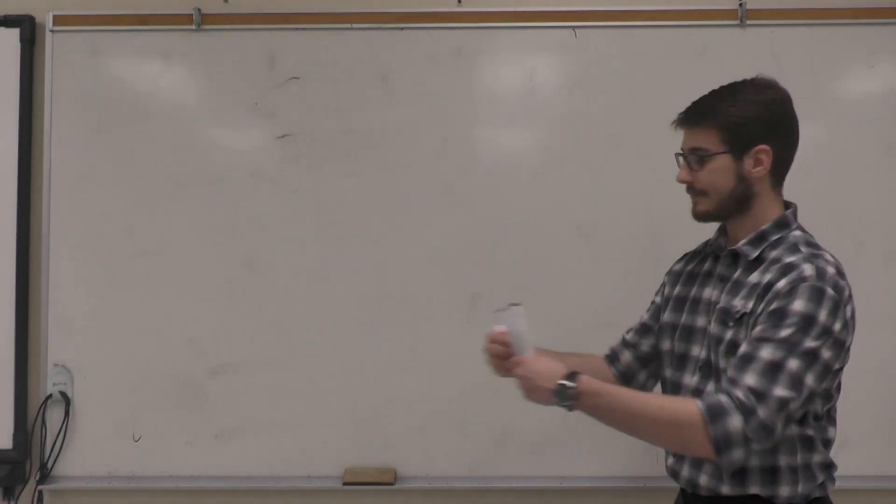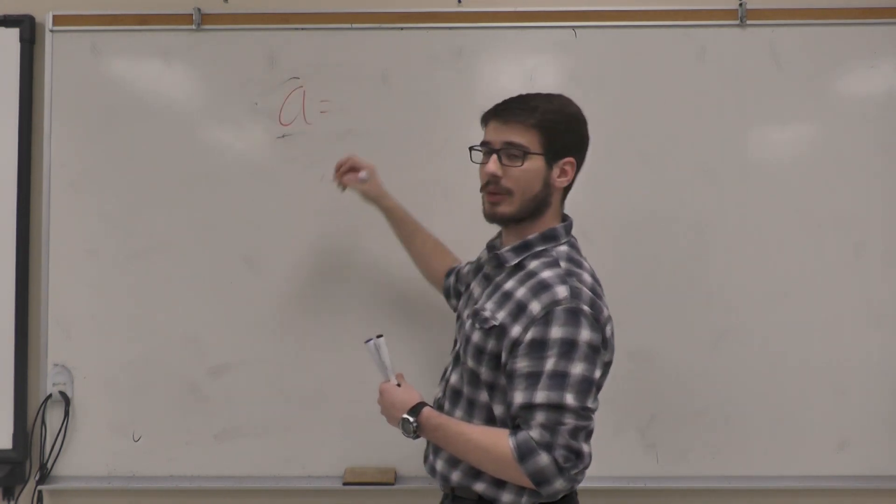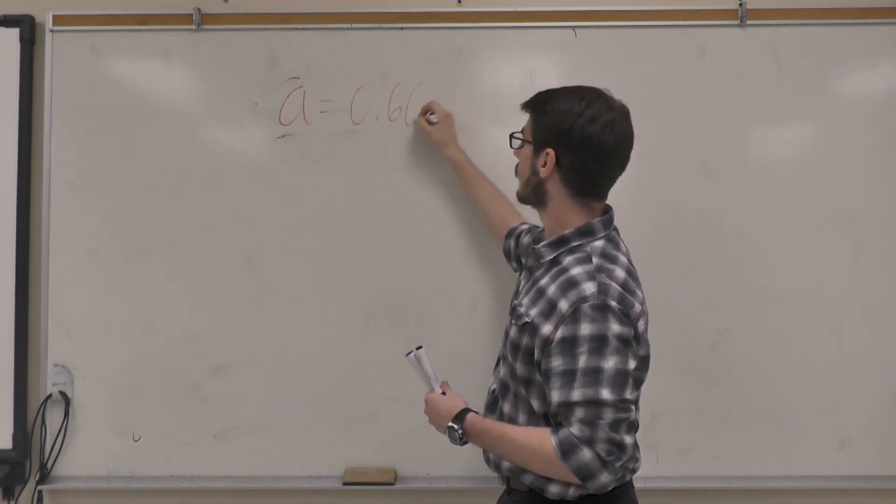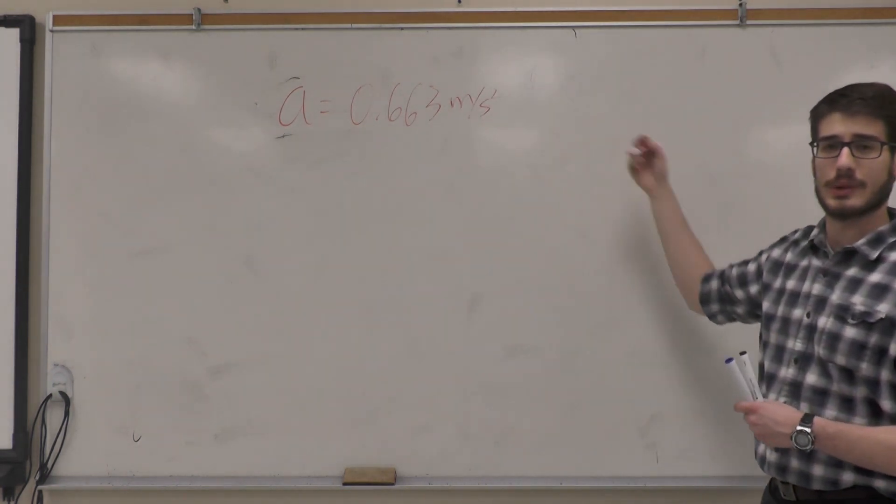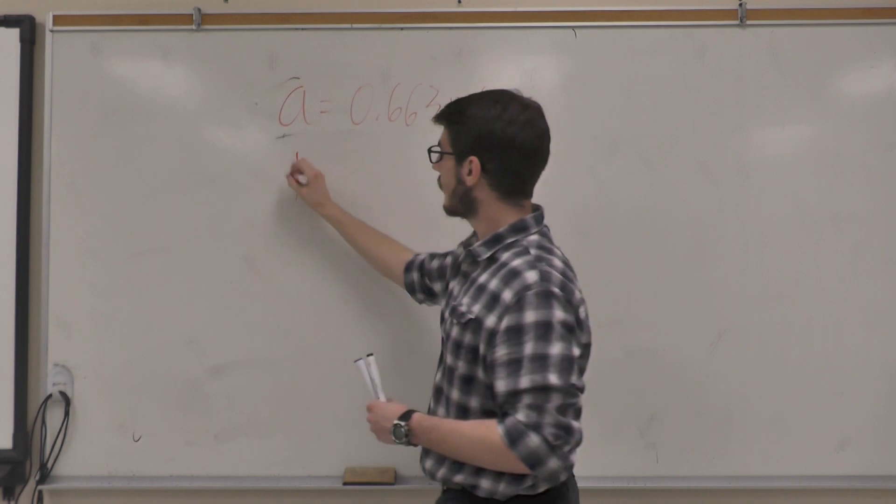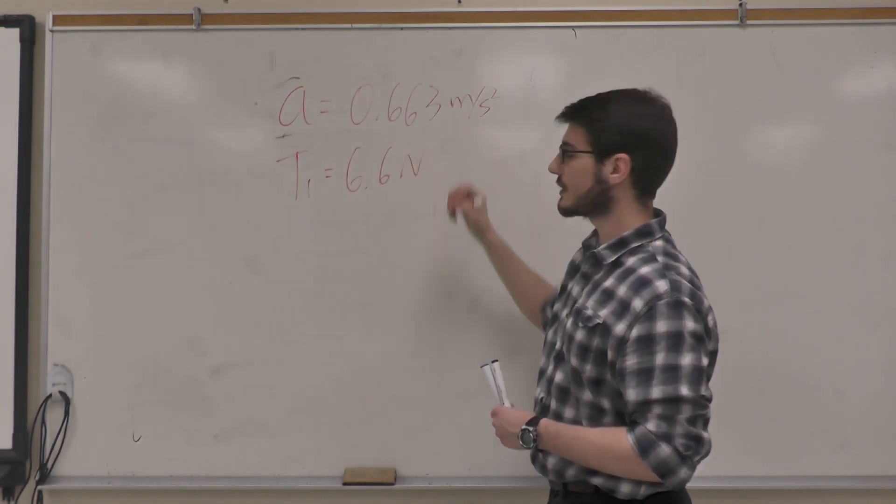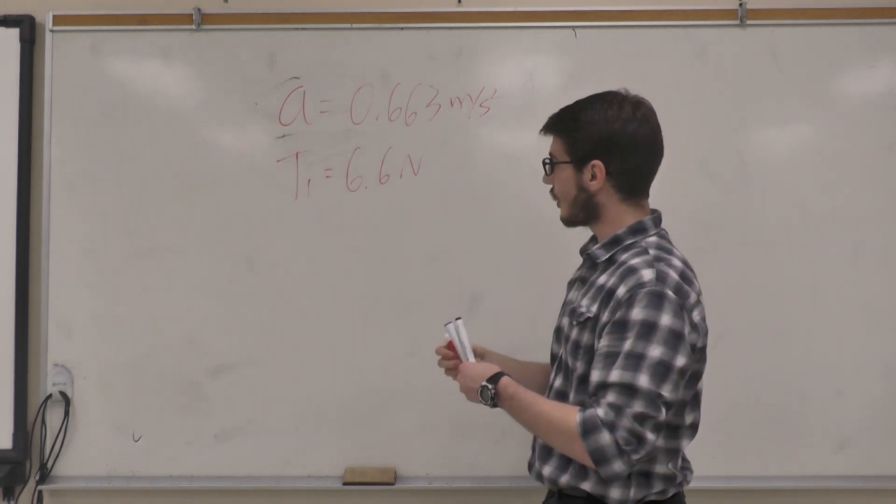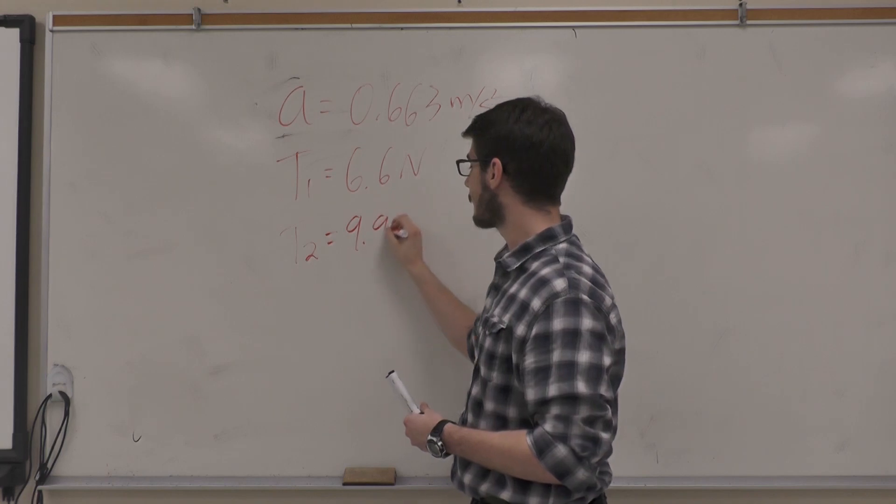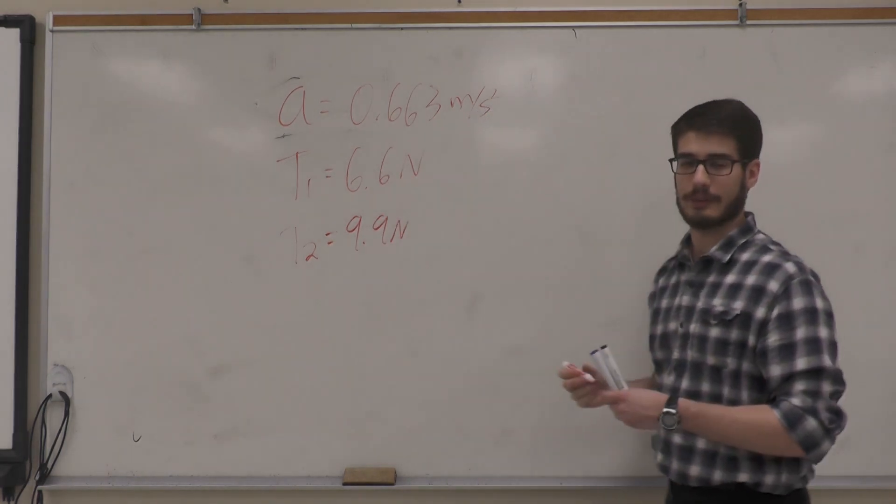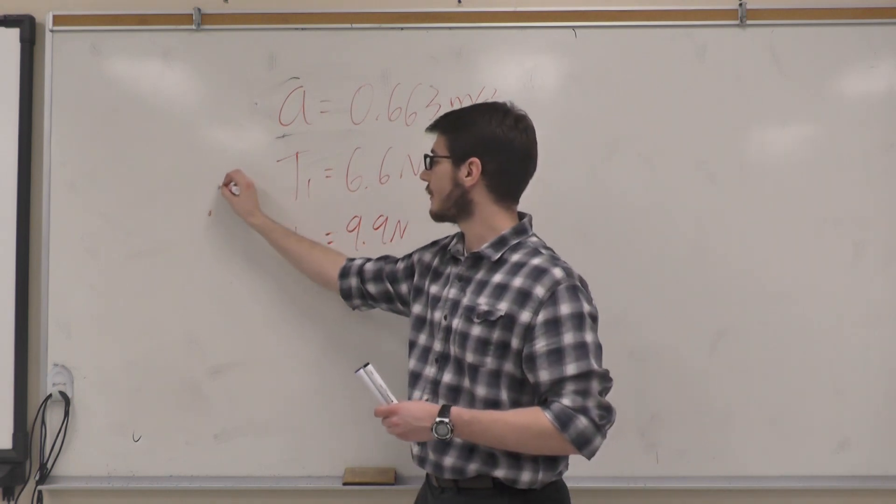Alright, finished. So we have in the results that the acceleration was 0.663 meters per second squared. Tension between the last 2 carts was 6.6 newtons, while tension between the first 2 carts was 9.9 newtons, following our 2 significant figure value. These are our therefore statements, and we are complete with the question.